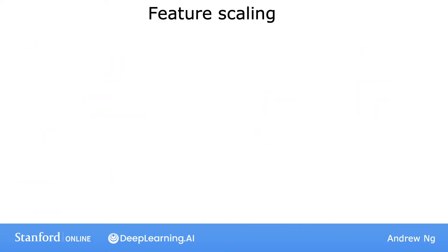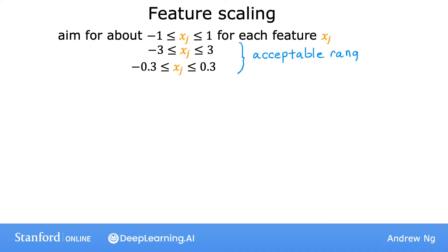As a rule of thumb, when performing feature scaling, you might want to aim for getting the features to range from maybe anywhere around negative 1 to somewhere around plus 1 for each feature x. But these values negative 1 and plus 1 can be a little bit loose. So if the features range from negative 3 to plus 3 or negative 0.3 to plus 0.3, all of these are completely okay.